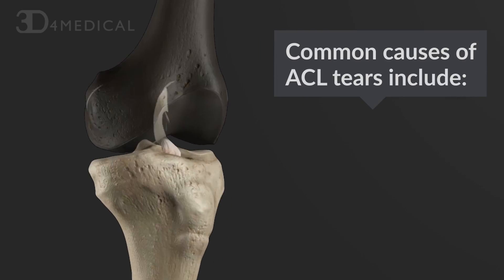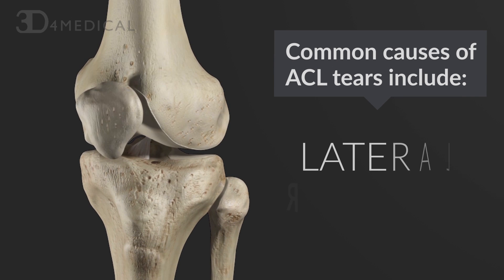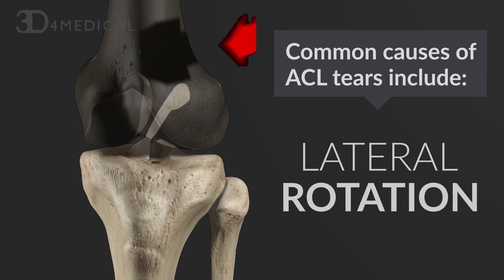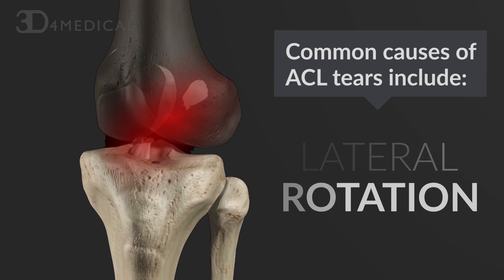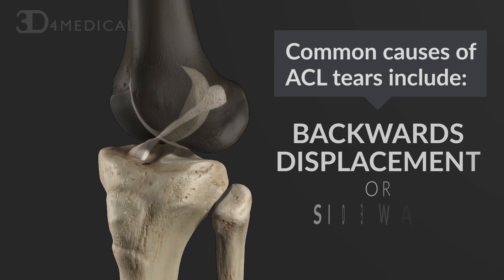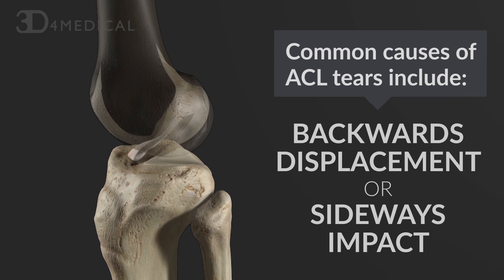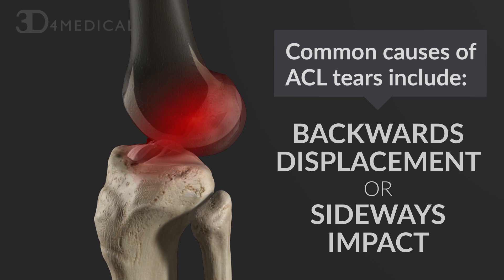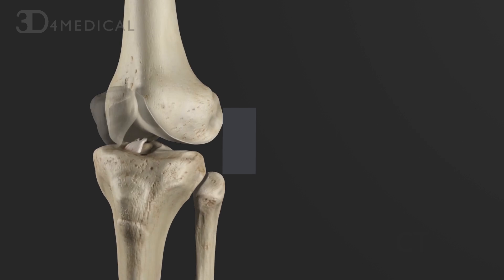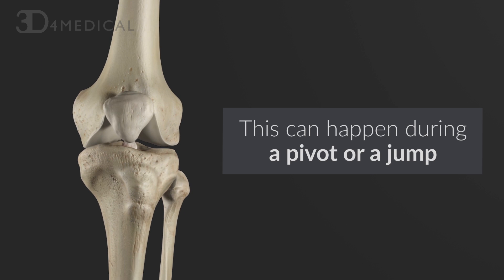ACL tears are caused by lateral rotation, backward displacement, or sideways impact of the knee while the lower leg is in a stable position. This can happen during a pivot or a jump.